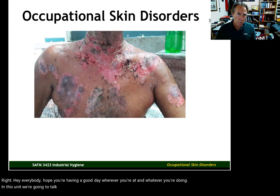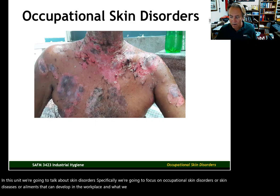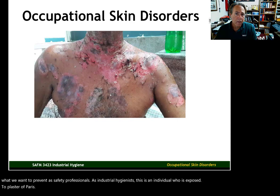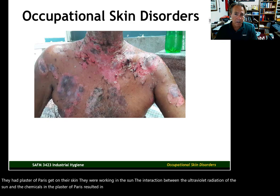In this unit, we're going to talk about skin disorders. Specifically, we're going to focus on occupational skin disorders or skin diseases or ailments that can develop in the workplace. What we see on the screen here is a great introductory example of what we want to prevent as safety professionals, as industrial hygienists. This is an individual who was exposed to Plaster of Paris. They had Plaster of Paris get on their skin. They were working in the sun. The interaction between the ultraviolet radiation of the sun and the chemicals in the Plaster of Paris resulted in this severe condition.